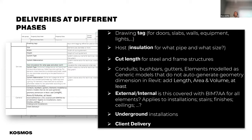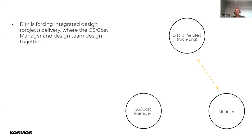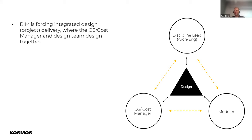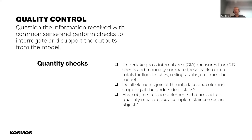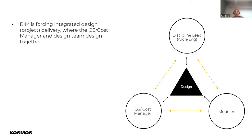External versus internal — is that covered within your definition and coding structures, and how is that visible within the design information? Especially if you have soffits externally versus ceilings internally — often designers may design these all as just 'ceilings' without defining soffits externally versus internal ceilings. Collaboration, collaboration, collaboration — between the cost manager and quantity surveyor, the modellers — and remember there might be a separate modeller for architecture, services, and construction — and different discipline leads. We need to communicate with all of them to deliver top-quality design and information, all defined within the BIM execution plan.